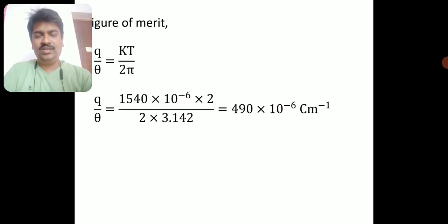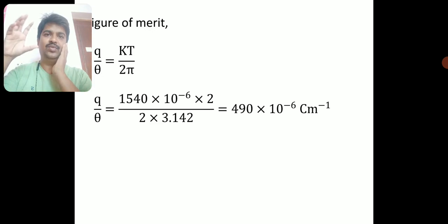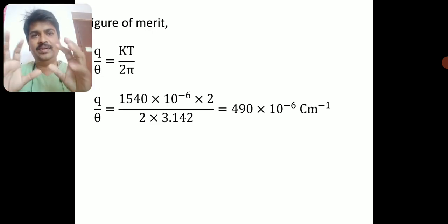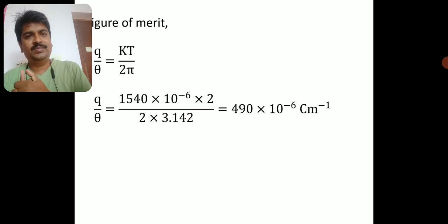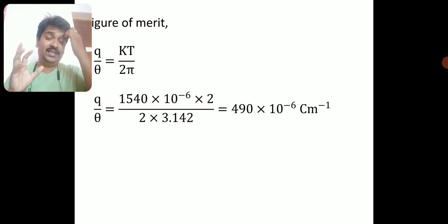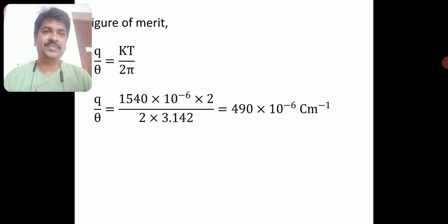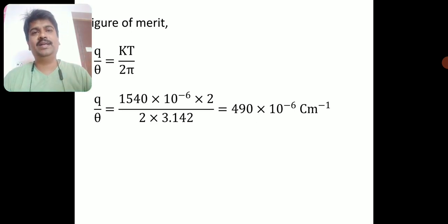The figure of merit, which is the reciprocal of charge sensitivity, is given by T / (2π × K). Substituting K = 1540 × 10⁻⁶ and T = 2, I get figure of merit = 490 × 10⁻⁶ coulombs per meter. The unit is coulombs per meter, since deflection is measured in meters on the scale.